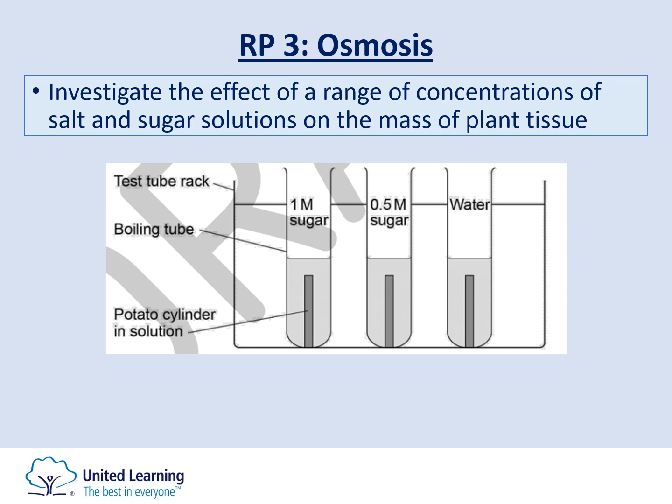Looking at three solutions — 1 mole sugar, 0.5 moles sugar, and water only — the potato also contains water. In the 1 mole sugar solution, the potato has a higher concentration of water than the solution, so water leaves the potato and enters the test tube. This decreases the mass and length of the potato because particles are leaving.